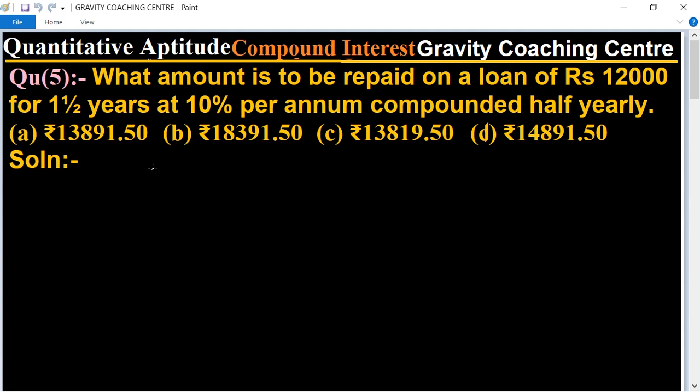Solution: Given, Principal P equals rupees 12,000 and Time T equals one and a half years.